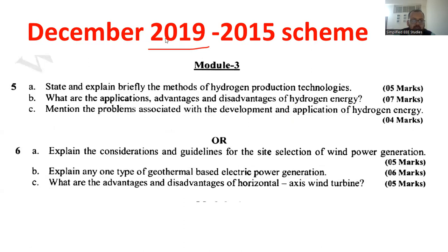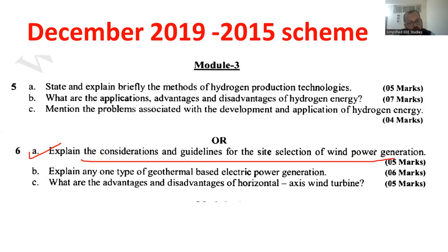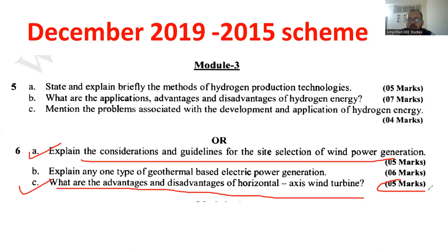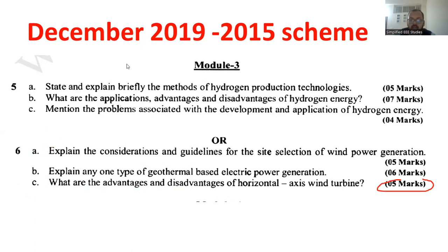One more set is remaining for the 2015 scheme. Let us see what are the questions related to wind energy. Explain the considerations and guidelines of wind power generation — that's also quite important. One more question: what are the advantages and disadvantages of horizontal axis wind turbine, which carries 5 marks each — that is 10 marks total coming from wind energy. You can score it well.